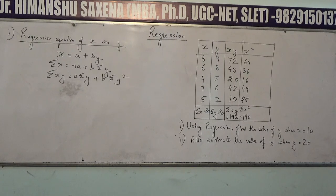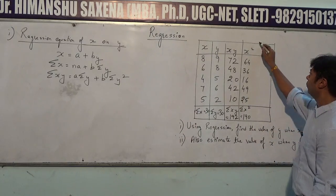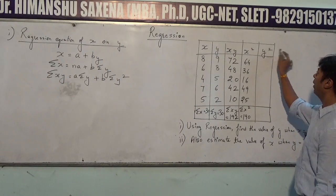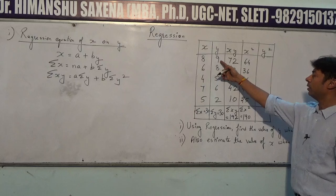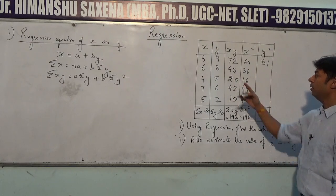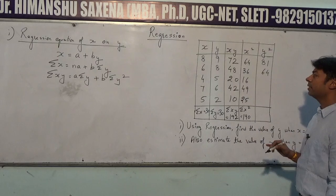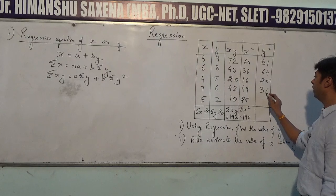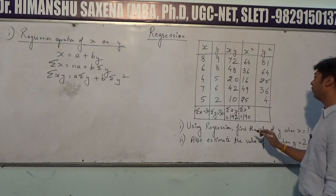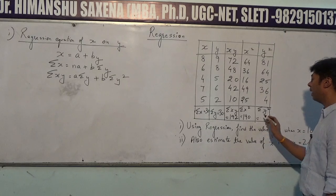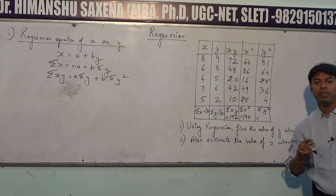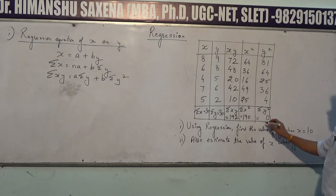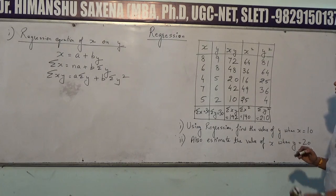The table remains the same, but we need to add one more column for y². Computing: 9²=81, 8²=64, 5²=25, 6²=36, and 2²=4. Adding all values of the y² column gives summation y² equal to 210.